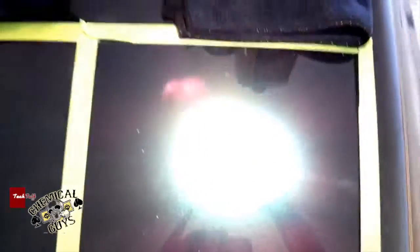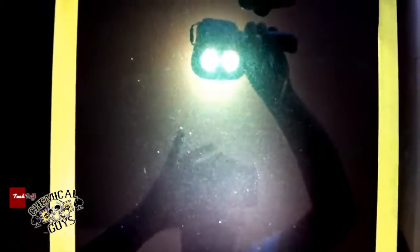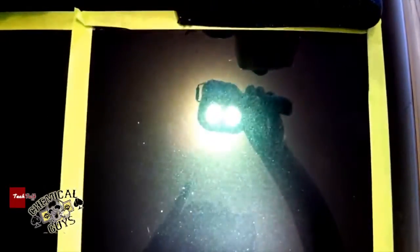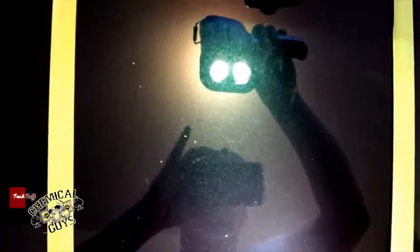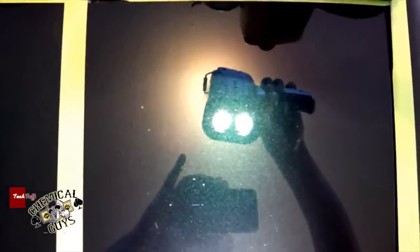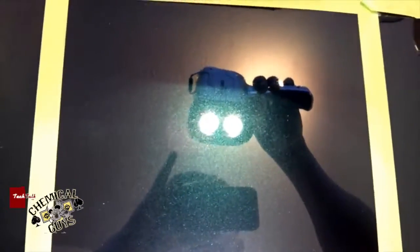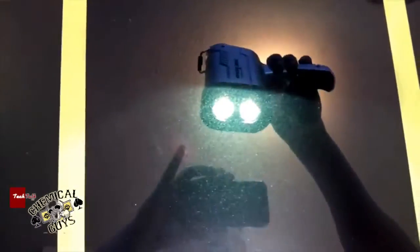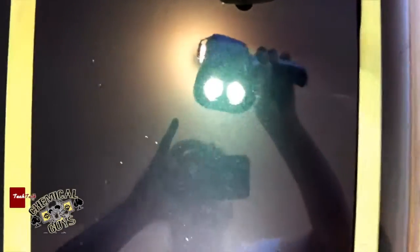So this is 205. Again, try to focus on the middle part because that's really where I got the most polishing. This is 205, or sorry, I apologize. That's 105 followed by 85RD using a yellow pad with 105, which is super aggressive, and the 85RD on a blue pad. This is the V34 with the yellow pad, followed by V38 with a blue pad. So pretty close. Again, it's hard to really tell on this video. We really got to see it in person.